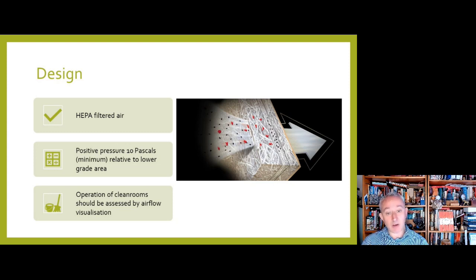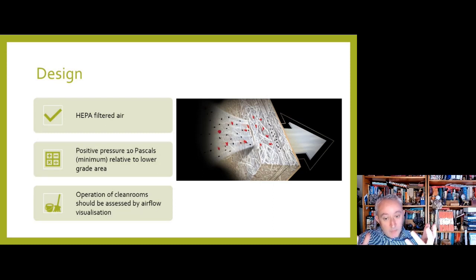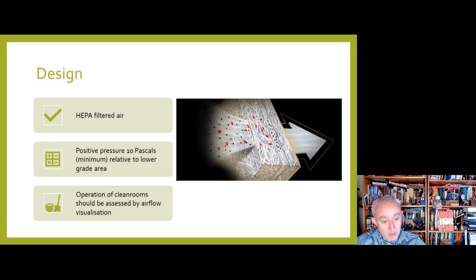Airflow patterns should be visualized in every grade of clean room to demonstrate there is no ingress from lower grade areas to higher grade areas, no air from less clean areas rising upwards, and no air directed over operators that might ingress into a high-grade area. This is a particular concern when operators in grade B are interfacing with grade A, or even within grade A itself.